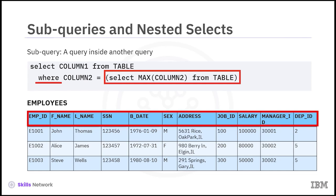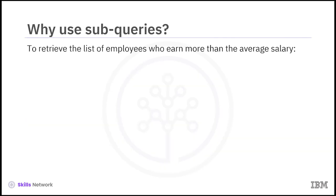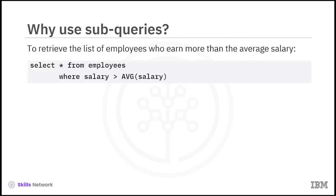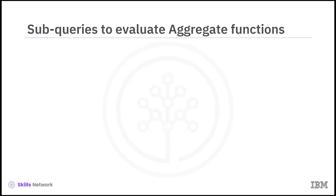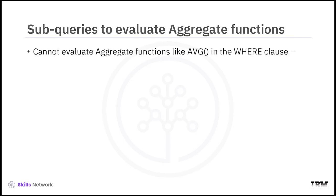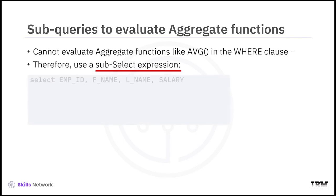We will now go over some examples involving this table. Let's consider a scenario which may necessitate the use of subqueries. Say we want to retrieve the list of employees who earn more than the average salary. We could try: SELECT * FROM employees WHERE salary is greater than AVG(salary). However, running this query will result in an error indicating an invalid use of the aggregate function. One of the limitations of built-in aggregate functions like the average function is that they cannot always be evaluated in the WHERE clause. So, to evaluate a function like AVG in the WHERE clause, we can make use of a subselect expression like the one shown here.